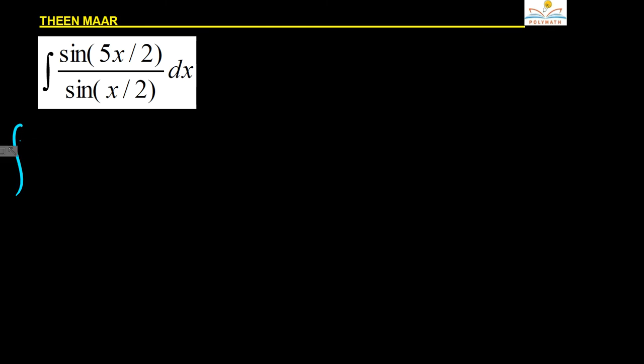Now if you see this denominator is containing sin(x/2) and the numerator is containing sin(5x/2). Now what happens, I'm thinking in this way: I'm writing it as 2 sin(x/2) cos(x/2) cos(x/2) to apply the sin 2a formula.